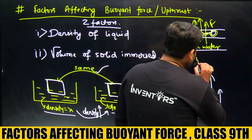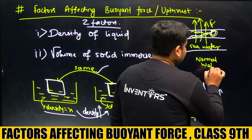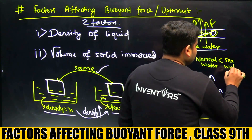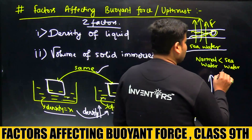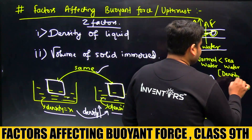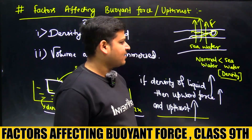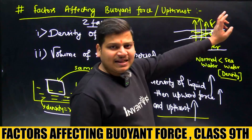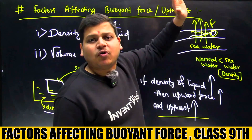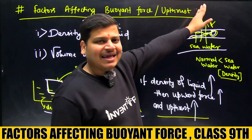जैसे density बढ़ती है, upward force बढ़ता है, upthrust बढ़ता है। Normal water का density sea water की तुलना में कम है। Sea water is more dense, so if it is denser, then upward force will be much more, and swimming will be easier.